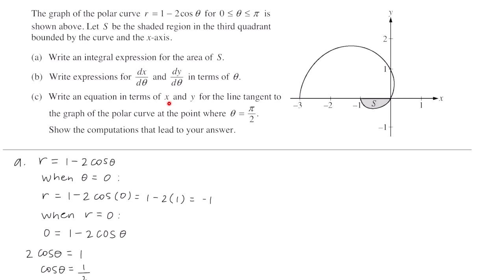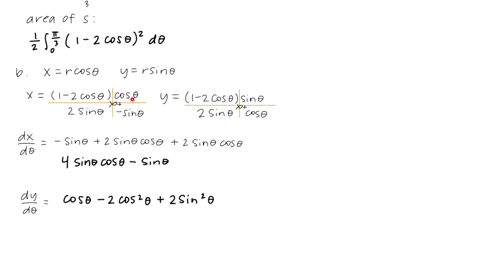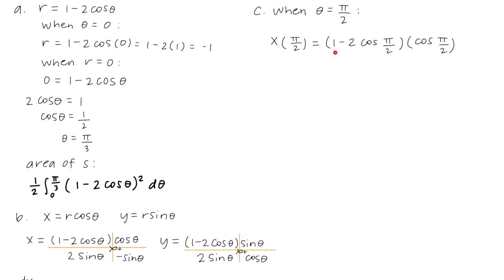Part C says write an equation in terms of x and y for the line tangent to the graph of the polar curve at the point where theta equals pi over 2. Show computations that lead to your answer. To write the tangent line equation, we need a point and a slope. To find the point, we plug theta equals pi over 2 into the equations for x and y. For x: (1 minus 2 cosine(π/2)) times cosine(π/2). Since cosine of pi over 2 is 0, x equals 0.